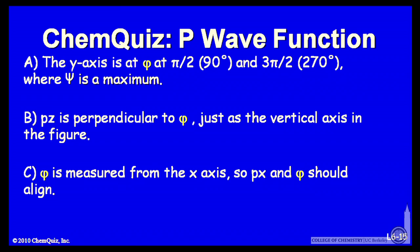B, pz is perpendicular to psi, just as the vertical axis in the figure. Or C, phi is measured from the x-axis, so px and phi should align. Think of those three possible explanations and make another selection.